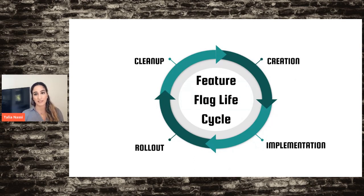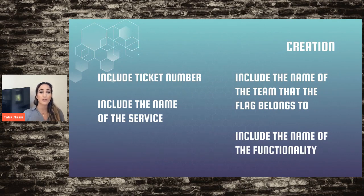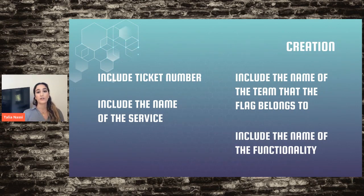The first step is creation. When creating a feature flag, it's really important to have a naming convention. Some options: you can include a ticket number from Jira, Asana, or whatever ticketing system you use. You can also include the name of the service the flag is for, the name of the team the flag belongs to, or the name of the functionality.